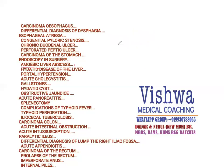Amoebic liver abscess — remember, we need to surgically drain the solitary large abscess-like cavity in the right lobe of the liver. The patient is usually a known case of chronic amoebiasis. They present with right hepatic pain; ultrasound performs the diagnosis and we can go for surgical drainage of the abscess. Similarly, we have a hydatid cyst in the liver, caused by Echinococcus granulosus.